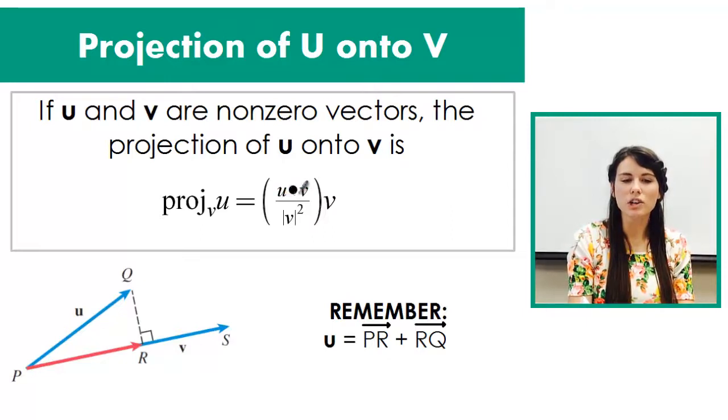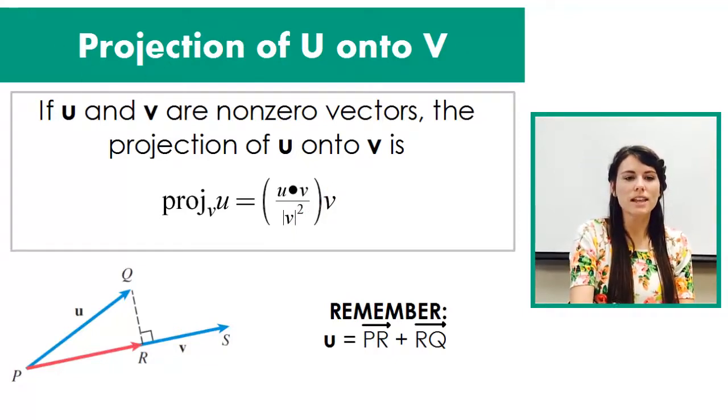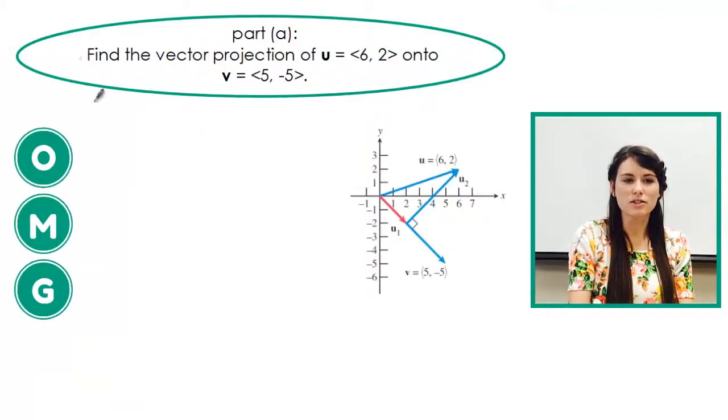So I'm going to find the dot product of u with v and then I take the magnitude of v squared and multiply that by the vector v and that is my projection vector. So let's go through and do that with this first one.